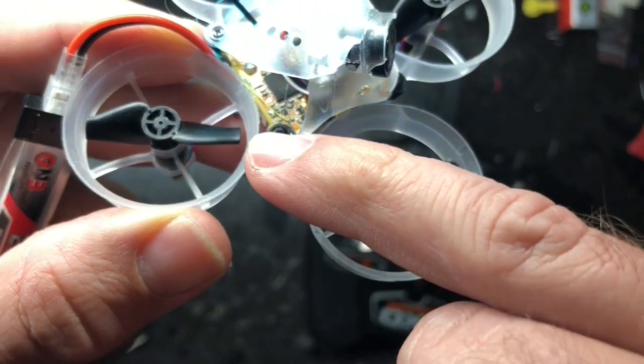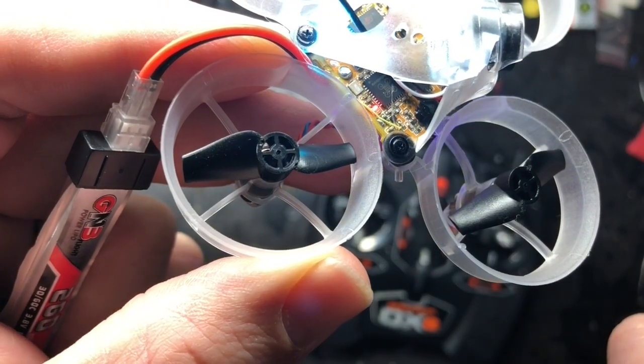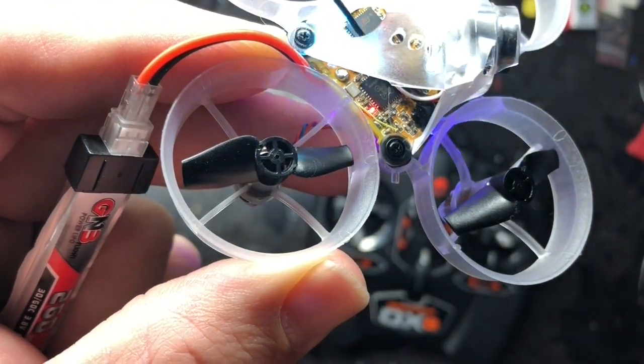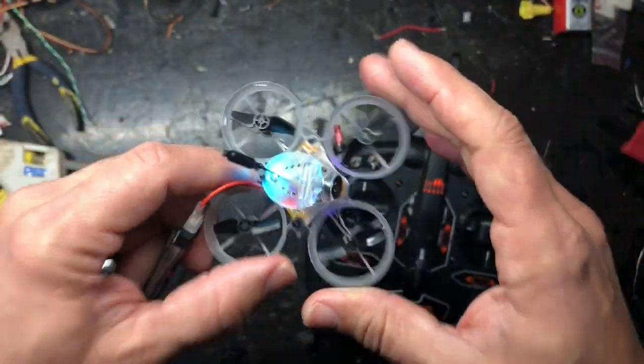You can barely see that there, but now you see the red light solid. That means that my radio is set up and I'm ready to fly that quad. Next we'll show you how to set it up in Betaflight.